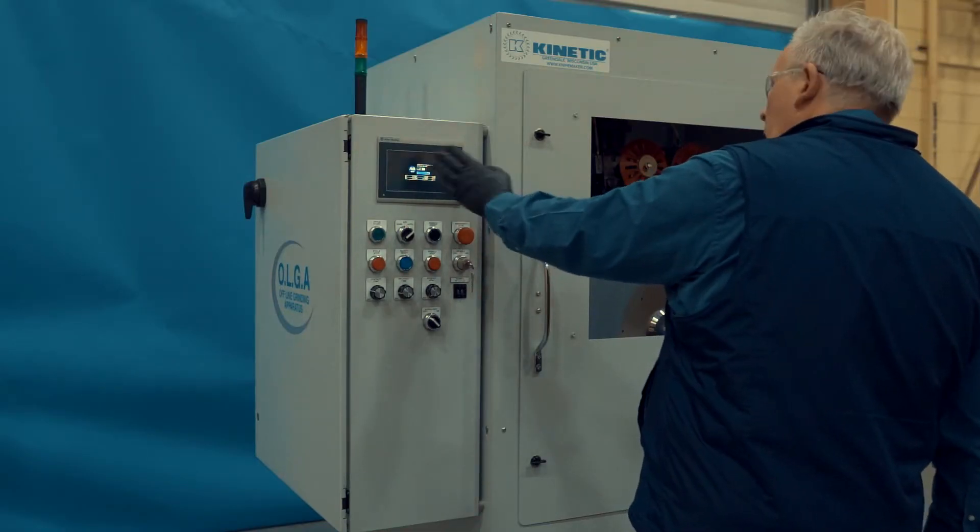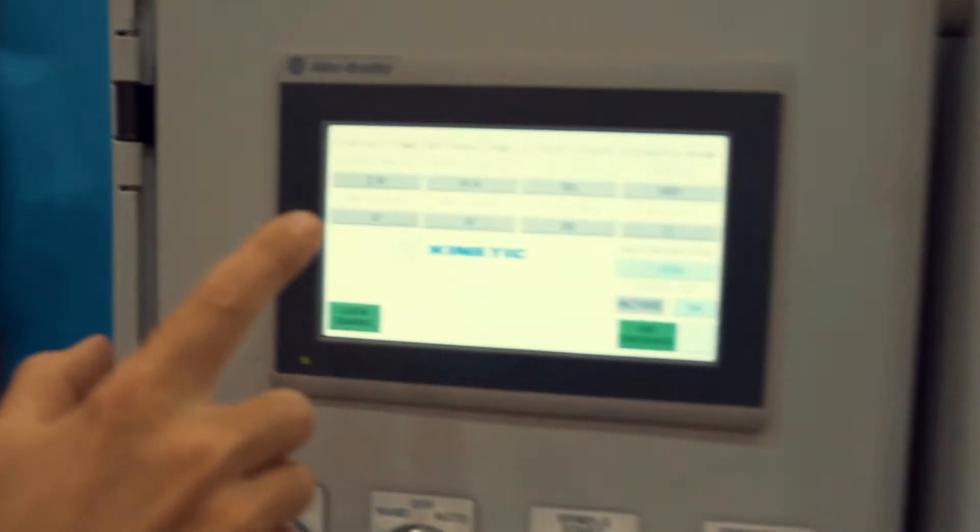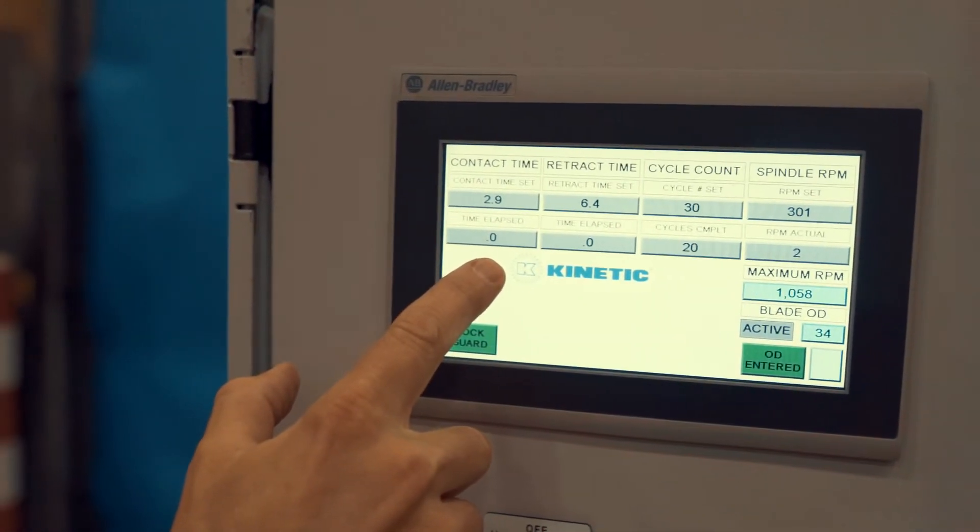We'll start off with the MMI. The man machine interface panel allows you to monitor the settings on OLGA.